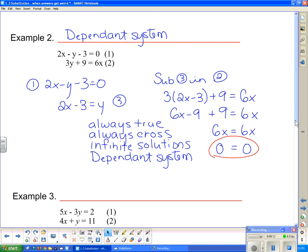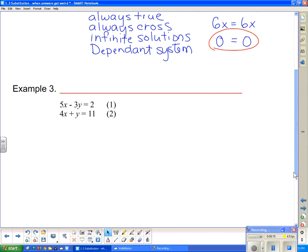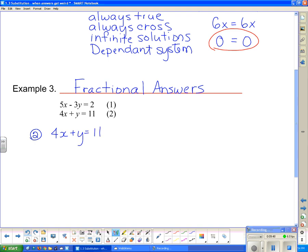Now example three, is just when things don't work out quite so nicely. Example three is going to be an example where we actually get fractional answers, which isn't a big deal. You just need to know how to deal with fractions. So we're going to go through this example where our answers aren't going to be quite so nice. And we're going to go by substitution again. So we'll start by substitution. So I notice that I have a y there that doesn't have a coefficient. So I say I'm going to take equation two and I'm going to rearrange it to get y by itself. 4x plus y equals 11. And now I'm going to subtract 4x from both sides to get y equals 11 minus 4x. And we're going to call this our equation three.